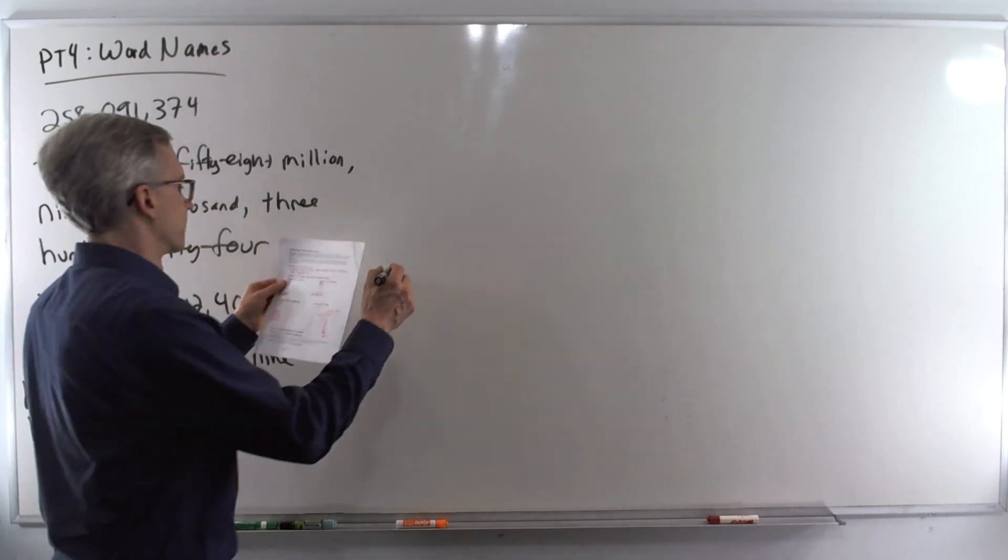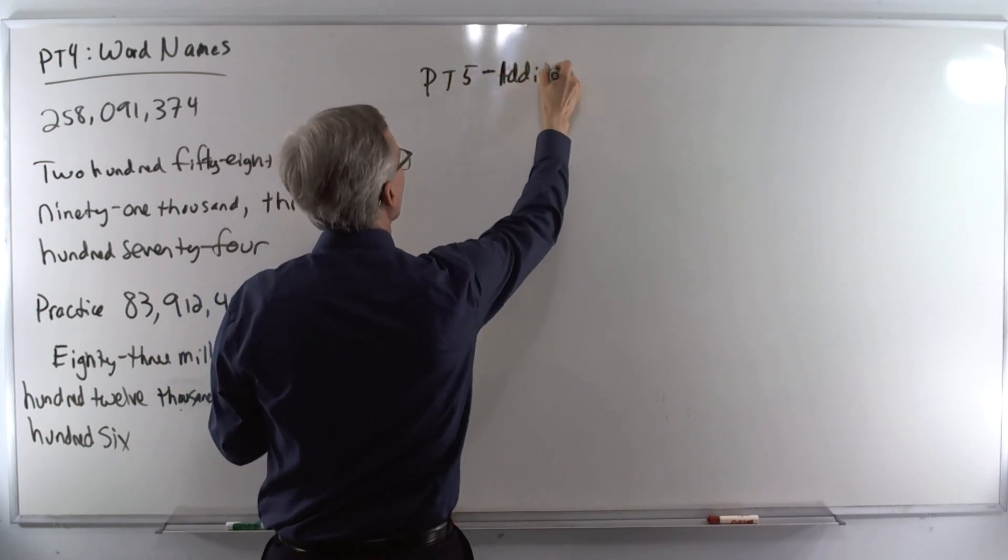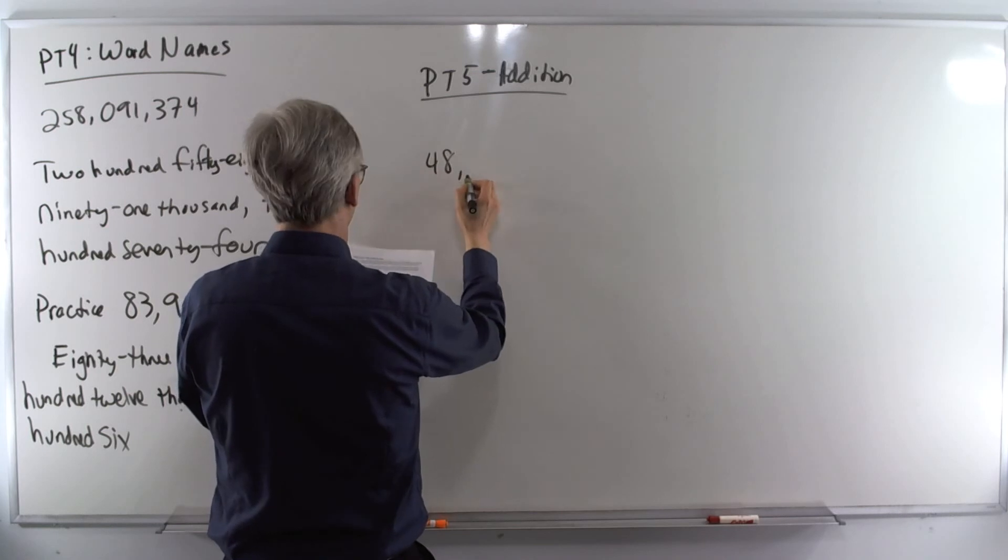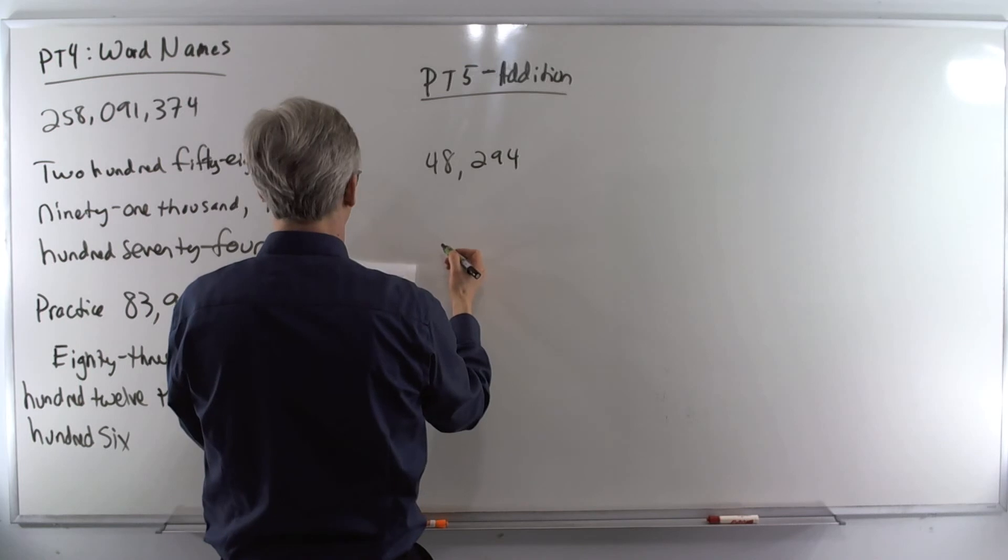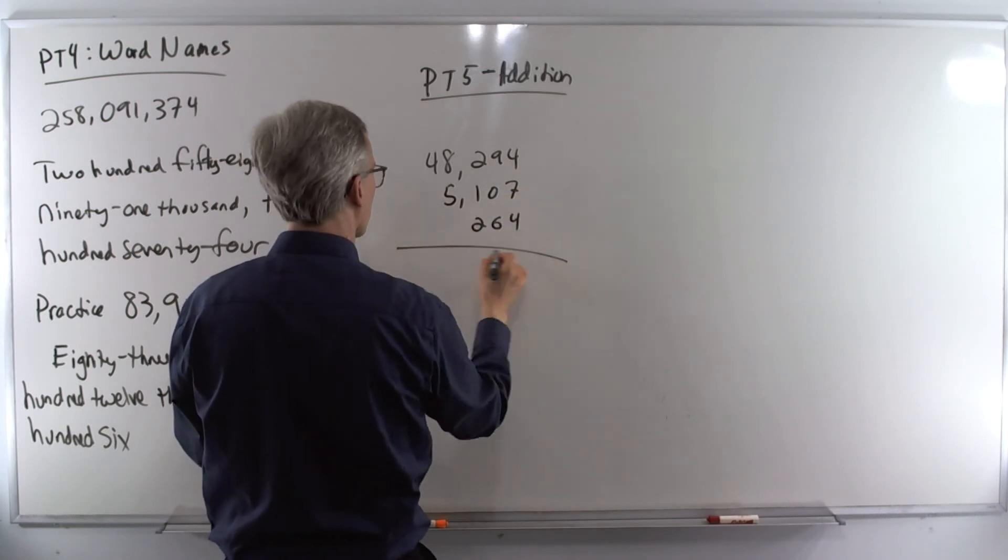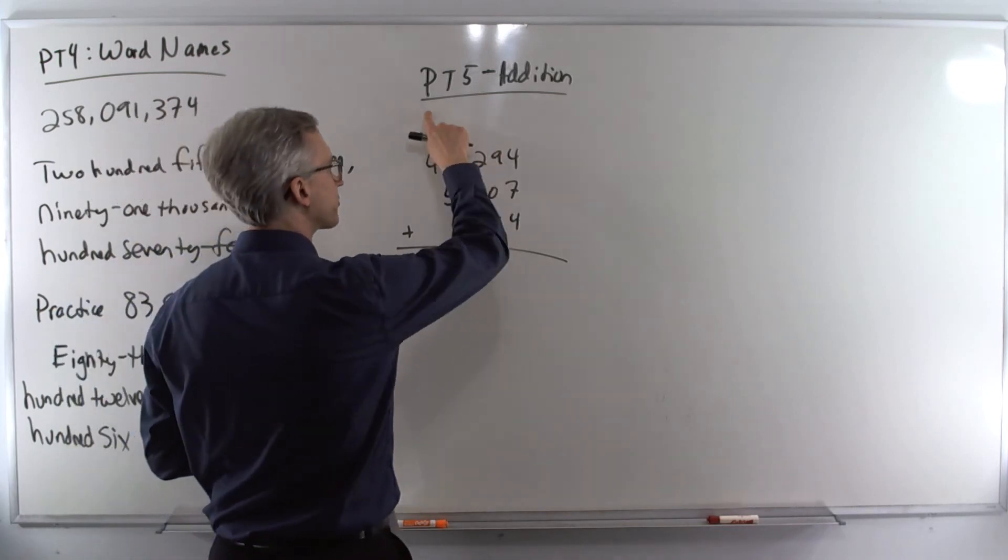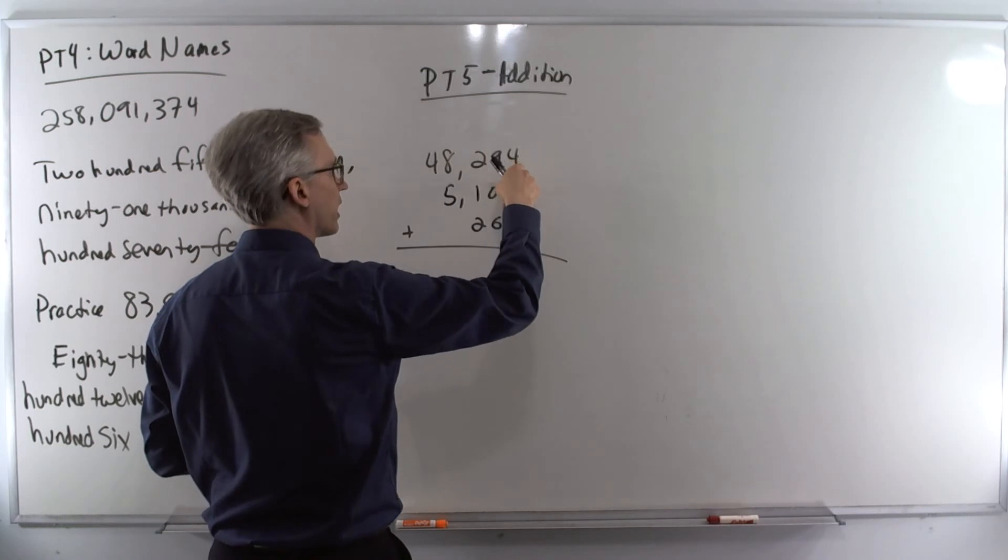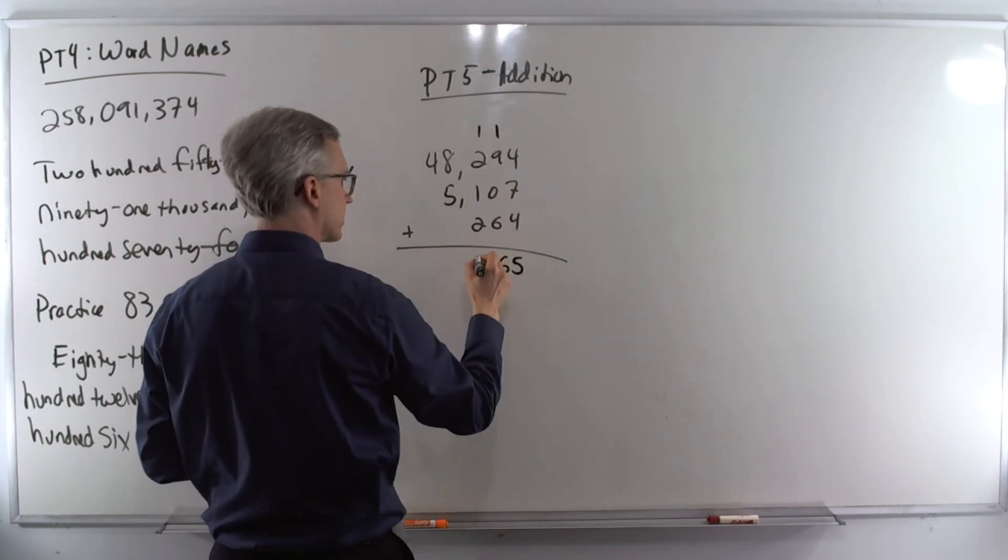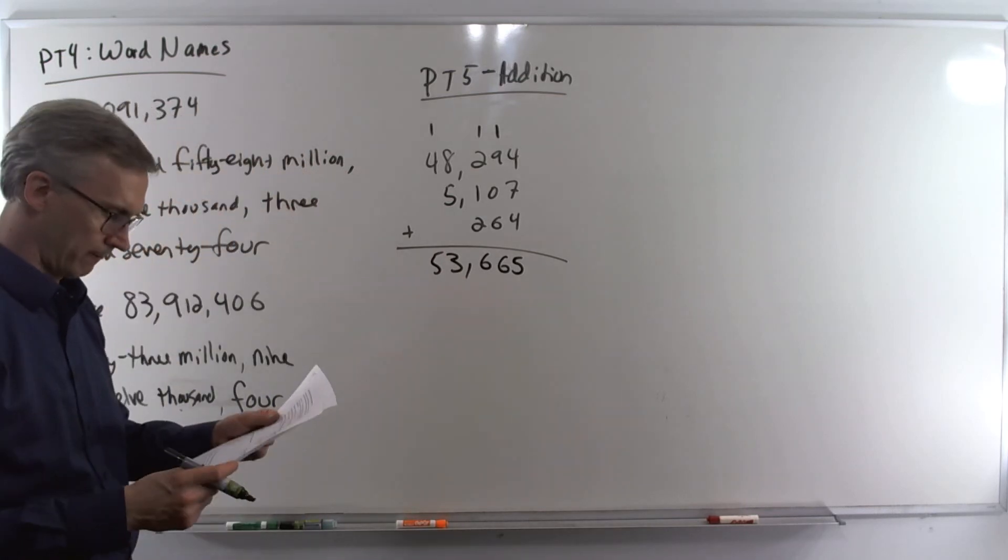Next up, arithmetic. We'll start with the addition problem type 5. So, we're going to add these together. Make sure you write your carry digits prominently in the rows. We got 8 and 7. That's 15. Carry the 1. 10 and 6. That's 16. Carry the 1. 2, 4, 6. You got a 6 there. Over here, a 3. That's 13. Carry the 1 and 5. 53,665.